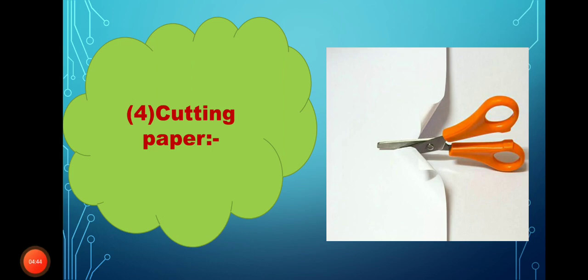Cutting a paper is considered a physical change, because the shape changes only — the shape of the matter changes, but its component is still the same. And we can fix the paper again; we can glue it again. So, it can return back to its original shape. Cutting paper is considered a physical change.